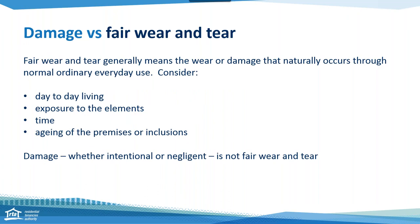One of the biggest questions we're always asked is: what is fair wear and tear and what is deemed to be damage? Fair wear and tear generally means the wear or damage that naturally occurs through normal, ordinary, everyday use. You need to consider the day-to-day living, exposure to the elements, time and ageing of the premises or inclusions. Examples include scuff marks on walls or floors, carpet pile flattened by furniture or foot traffic, or curtains and blinds that have deteriorated or become brittle after years of exposure to sunlight.